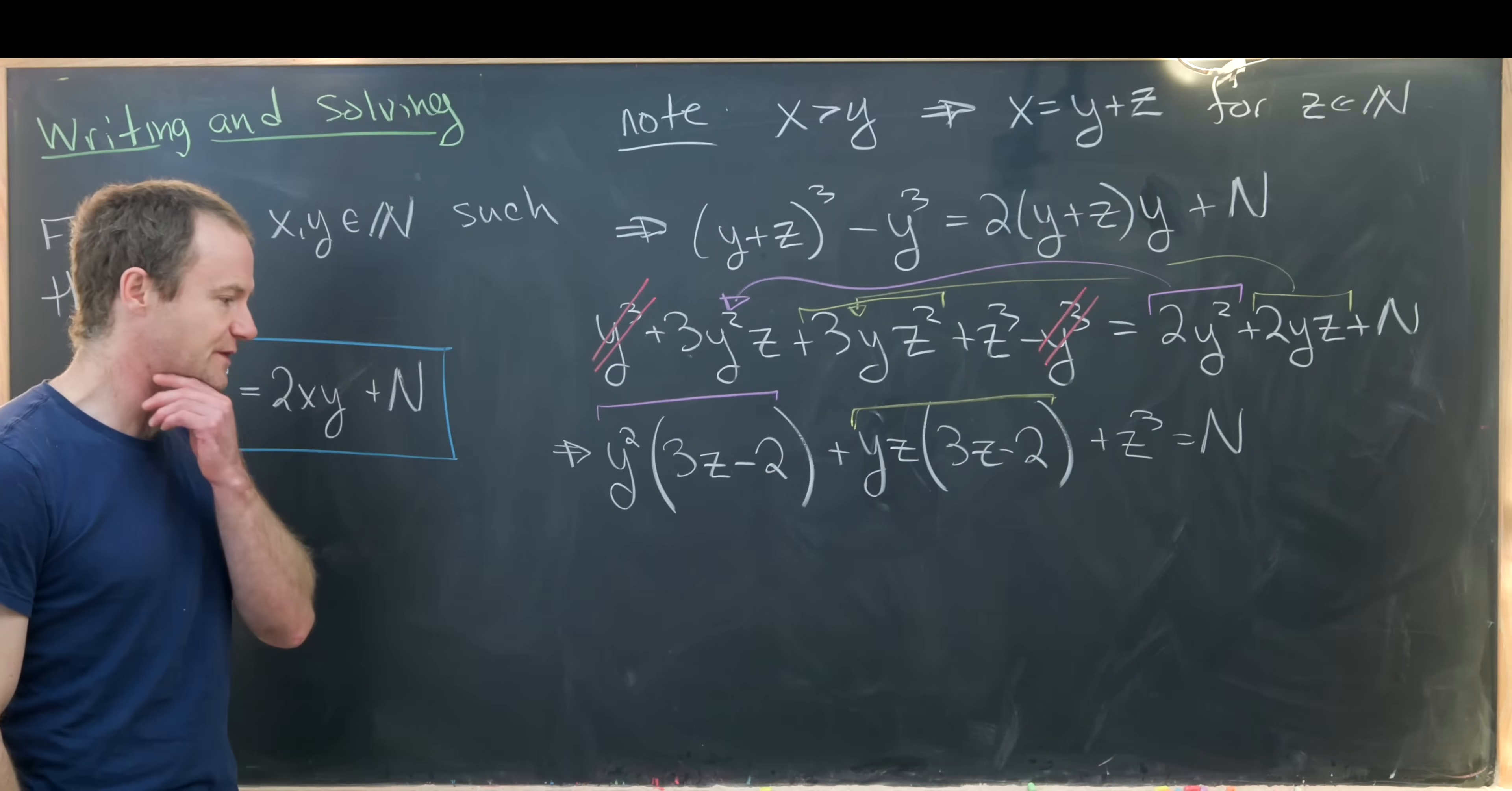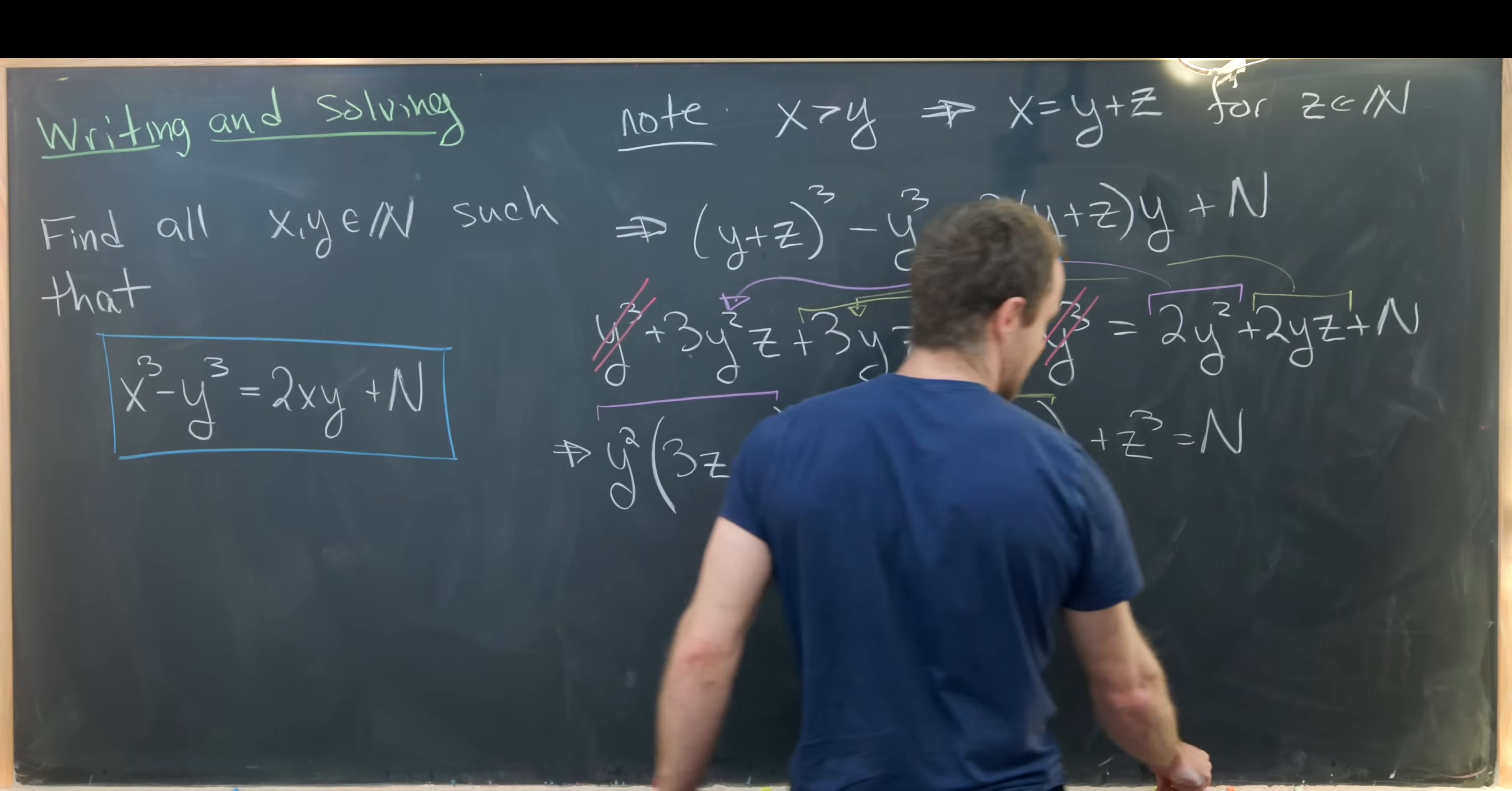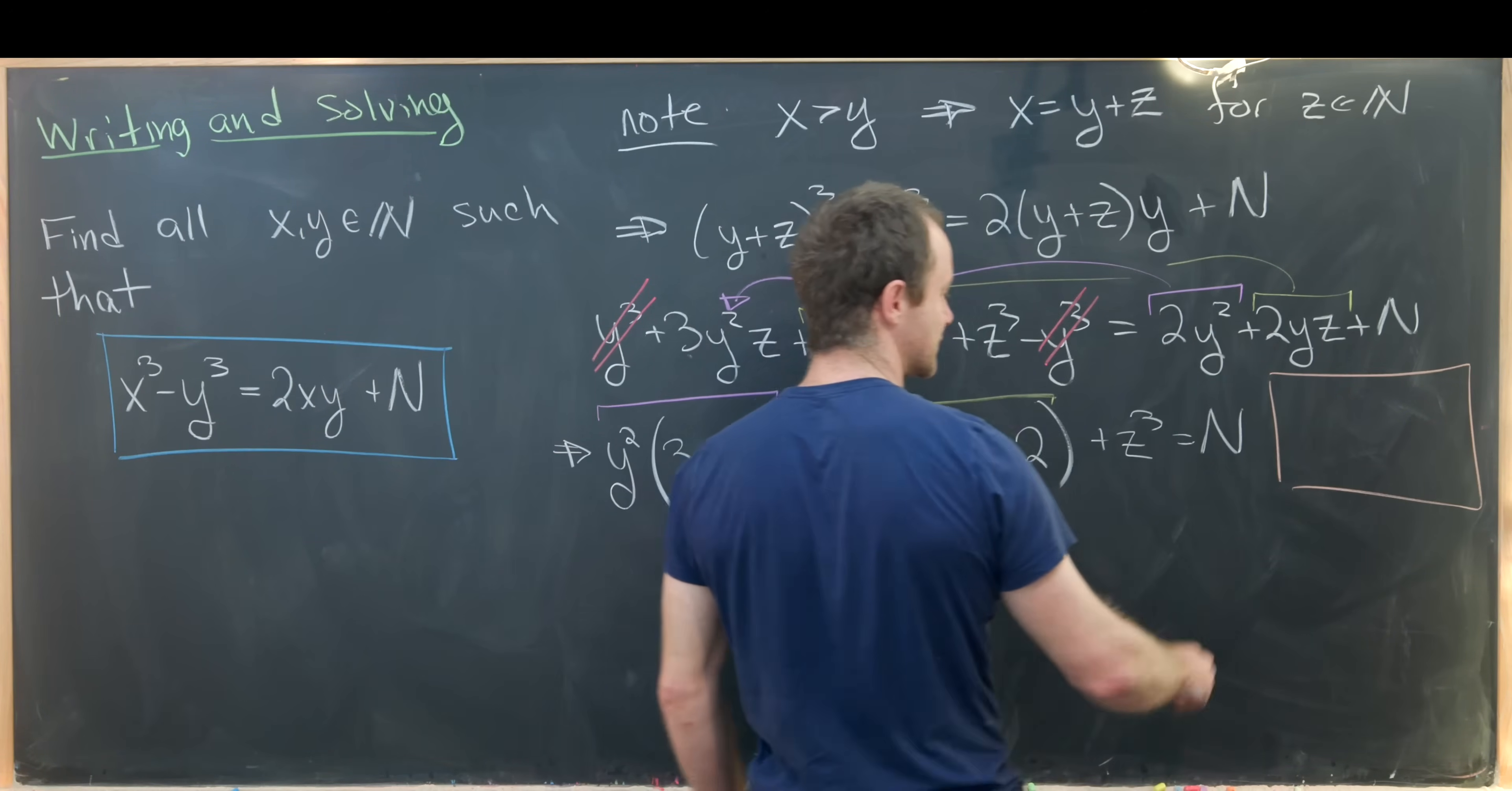But now let's notice from this that we get a bound on z, and that bound is going to be in terms of N.